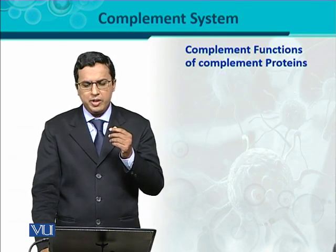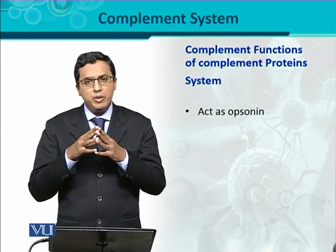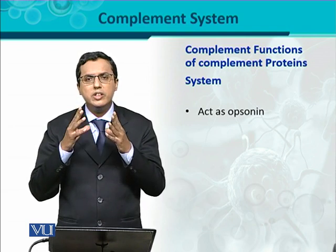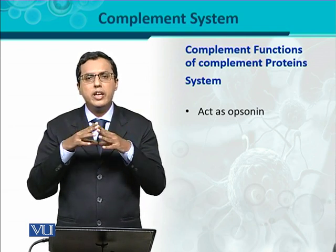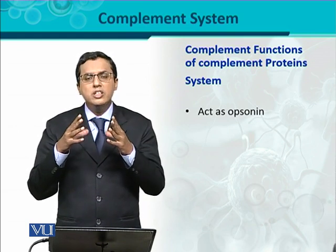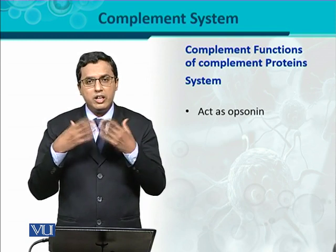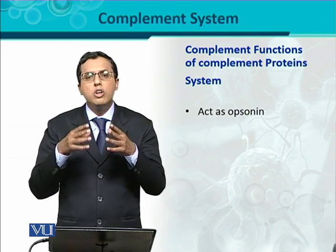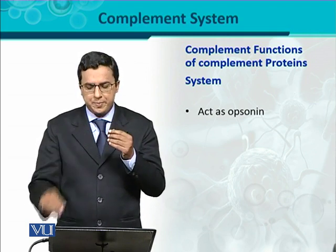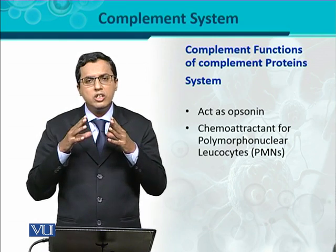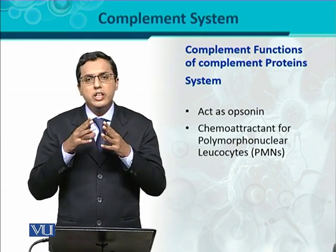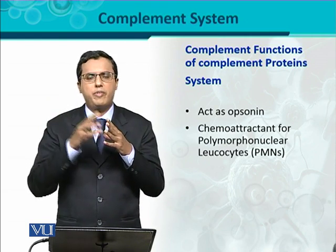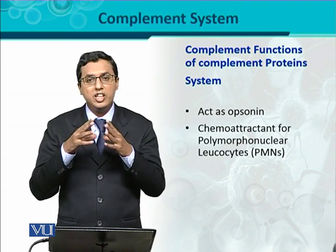An important function of complement proteins is opsonization — a process by which phagocytosis is enhanced. Because complement proteins enhance the process of opsonization, they act as opsonins — molecules that cause the process of opsonization. Similarly, complement proteins are also considered very good chemoattractants, meaning they cause the movement of phagocytes like neutrophils from blood towards the site of infection.